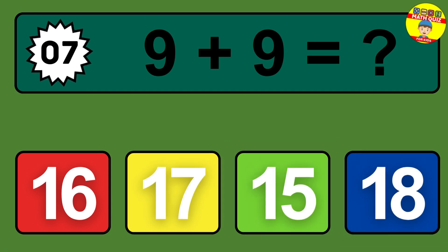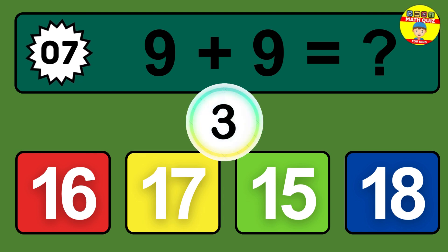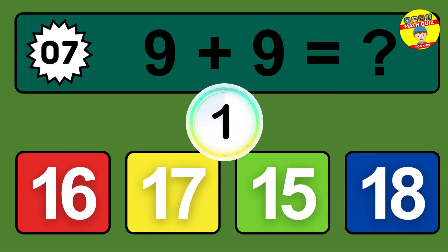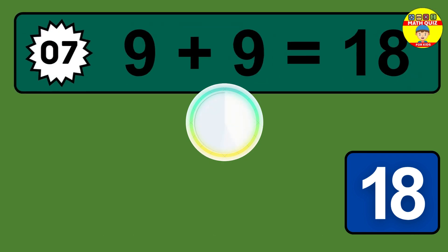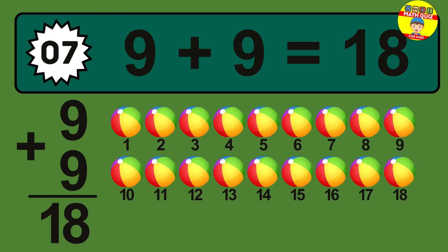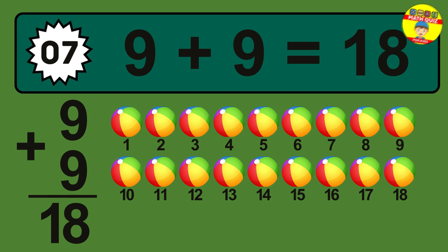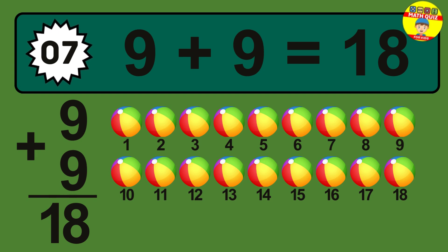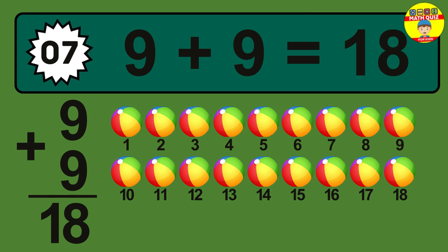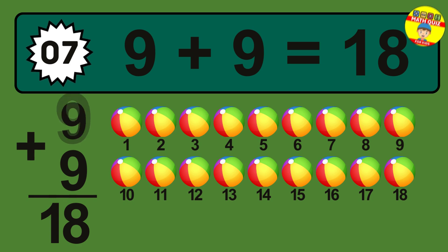Question 7. 9 plus 9 equals what? The answer is 9 plus 9 is 18. Let's count it: 1, 2, 3, 4, 5, 6, 7, 8, 9, 10, 11, 12, 13, 14, 15, 16, 17.